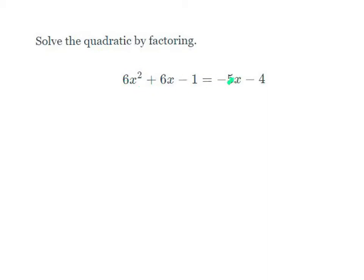Now remember, first of all, we want to write this in standard form. We have variables on both sides; we want to set it equal to 0. So we're going to get rid of what's on the right side. It says 6x squared plus 6x minus 1 equals negative 5x minus 4.